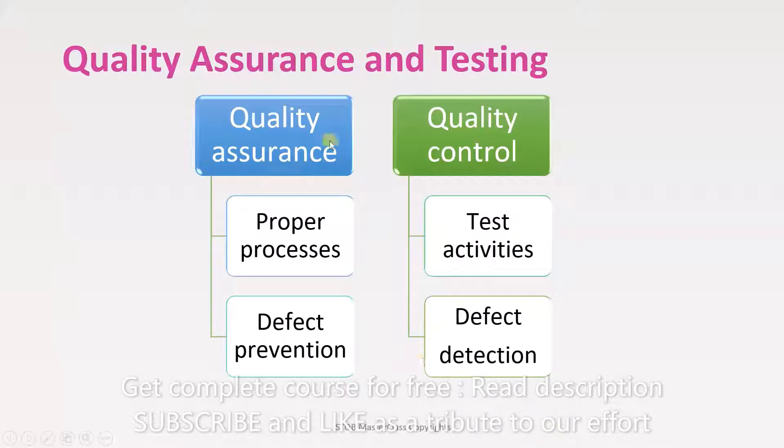So this is how the two are different. Quality assurance is a process. Quality control is an activity. Quality assurance is about preventing defects. Quality control is about finding defects.